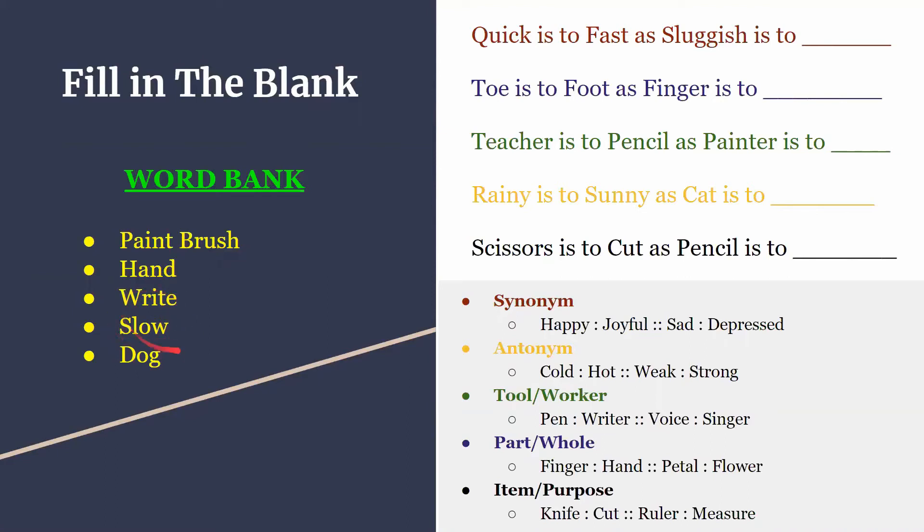Now the next one: toe is to foot as finger is to... we see blue and blue, so part and whole. So we have hand. Then rainy is to sunny - those two sound like opposites to me. Oh look, yellow - antonym. Cat is to... just kidding, cat is to dog.